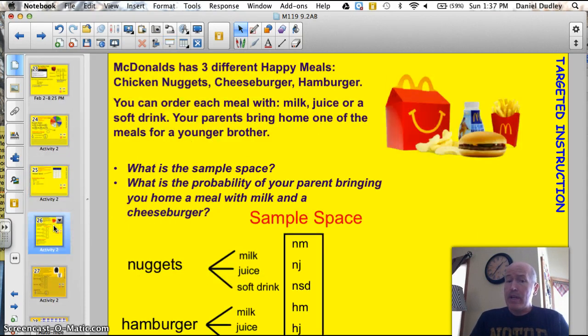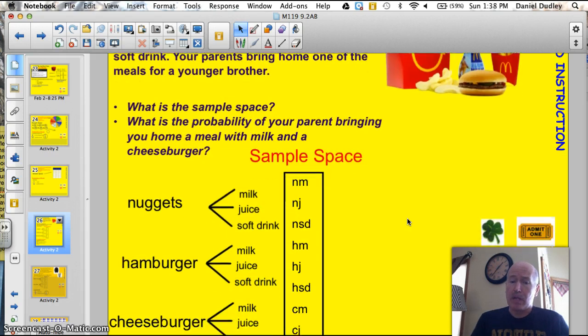And, a problem with the tree diagram. McDonald's has three different happy meals. Chicken nuggets, cheeseburger, and hamburger. You can order each meal with milk, juice, or a soft drink. Your parents bring you home one of these meals for a younger brother or sister, I suppose. What is that sample space? And what is the probability of your parent bringing you or your brother home a meal with milk and a cheeseburger? So, you have to figure out all the possible combinations. That's the sample space. All the possible combinations.